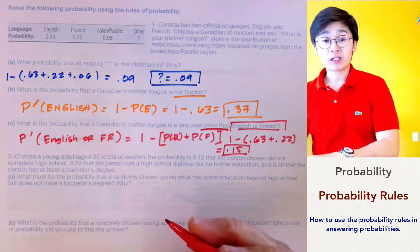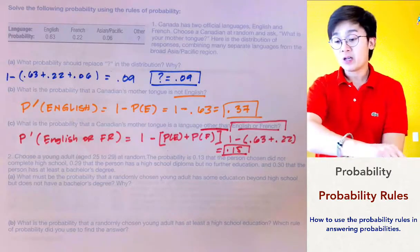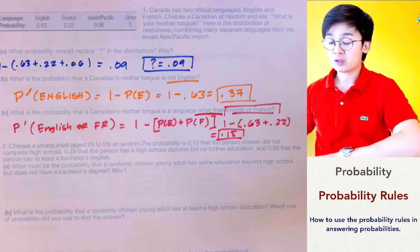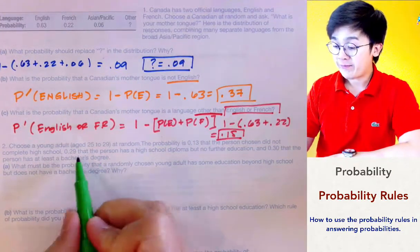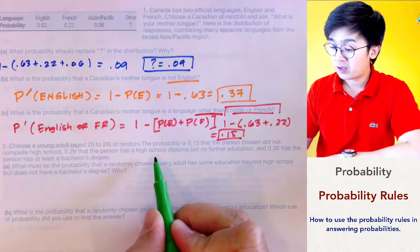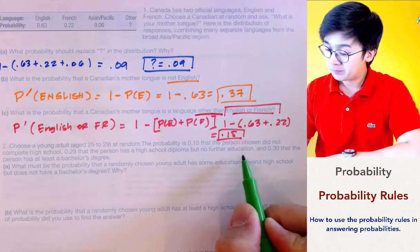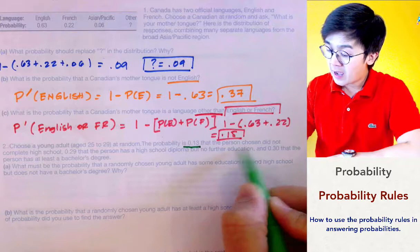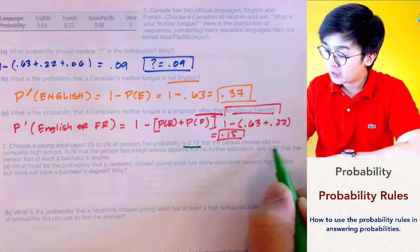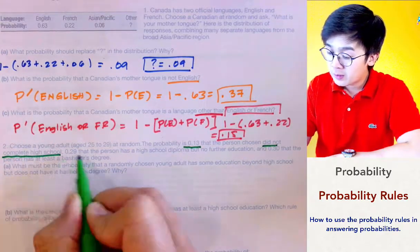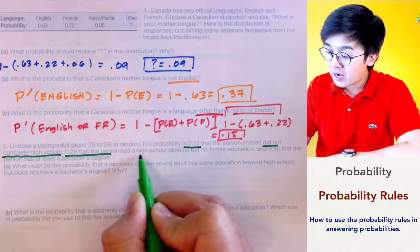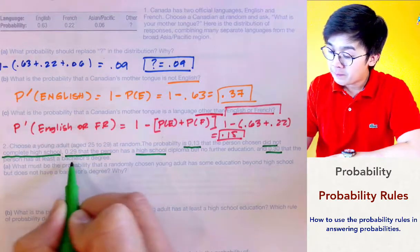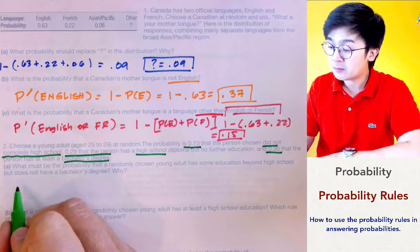That's how we use the probability rules for the first problem. For the second question in the worksheet, we are given the model for young adults and their education. We have 0.13 for did not complete high school, 0.29 for a high school diploma, and 0.30 for a bachelor's degree.